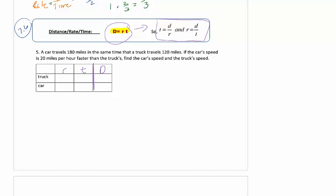I want you to read the problem, pause it right now, read the problem, try to set it up. When I read this, it says a car travels 180 miles. Look for the units - that means 180 is my distance. And at the same time the truck travels 120 miles, so we have 120 for this spot. If the car speed is 20 miles per hour faster than the truck speed, find the car's and the truck's speed.